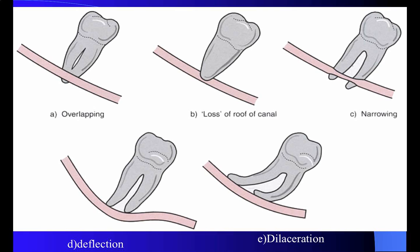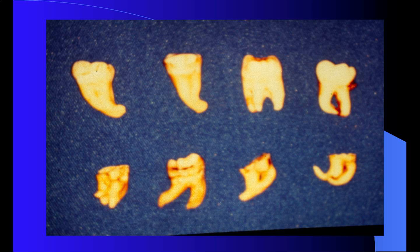In the x-ray exploration you can observe an overlapping of the root, loss of root canal, narrowing of the root near the inferior alveolar canal nerve, and deflection of that canal or dilaceration. In this slide you can see how different the ends of the roots of the lower third molars can be, which is important to be aware of during surgical treatment.